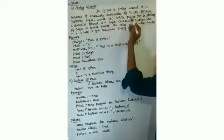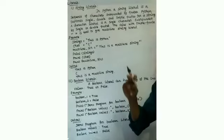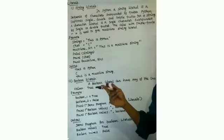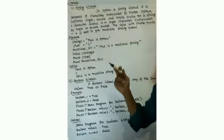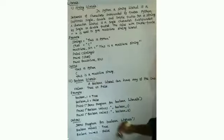A character literal is a single character enclosed by single or double quotes. Triple quotation marks are used for string literals — the value with the triple quote symbol is used to give a multiline string literal.